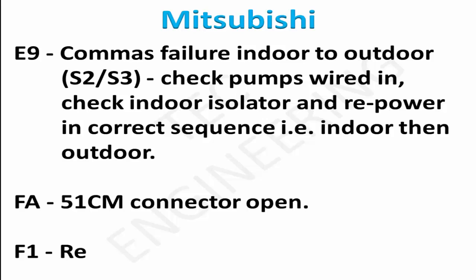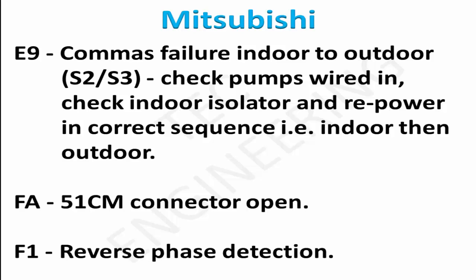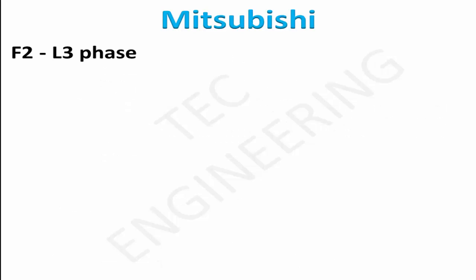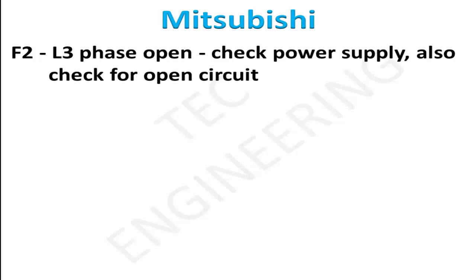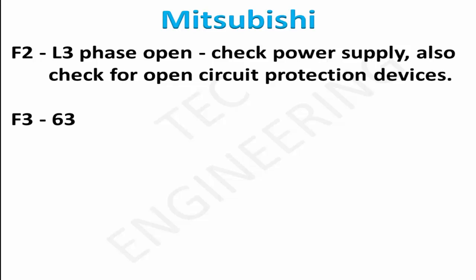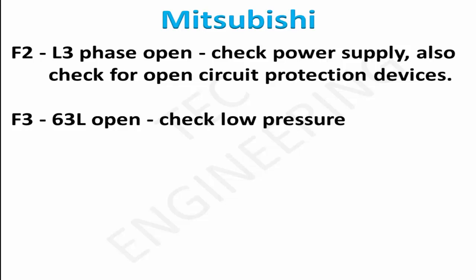F1: reverse phase detection. F2: L3 phase open — check power supply, also check for open circuit protection devices. F3: 63L open — check low pressure switch for disconnection or contact failure.